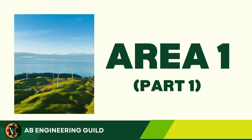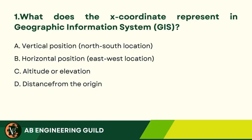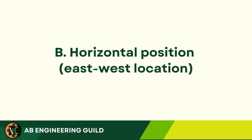Question 1. What does the x-coordinate represent in GIS? A. Vertical position, north-south location. B. Horizontal position, east-west location. C. Altitude or elevation. D. Distance from the origin. Answer: B. Horizontal position, east-west location.